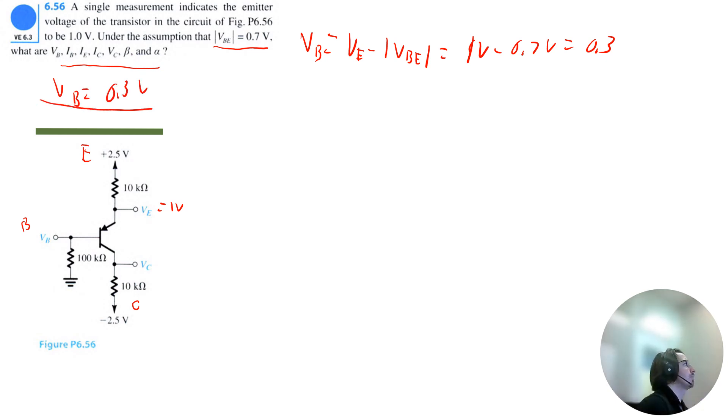Okay, let's find base current. So base current will be equal to the base voltage of 0.3 volts divided by that resistance of 100 kilo ohms. That is equal to 0.003 milliamps.